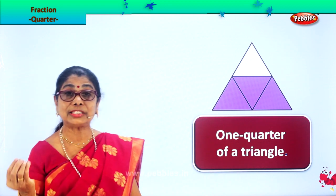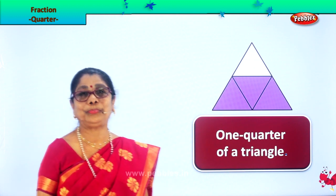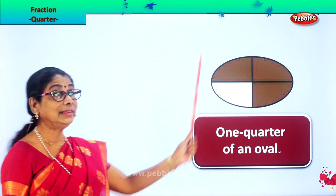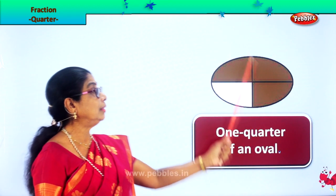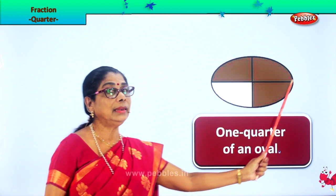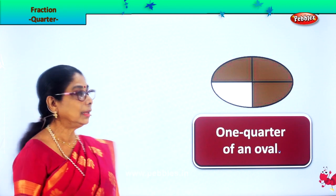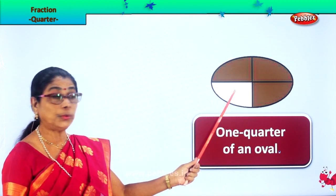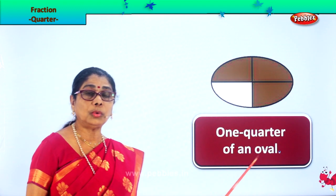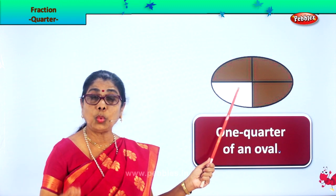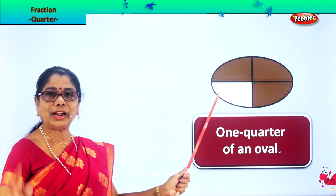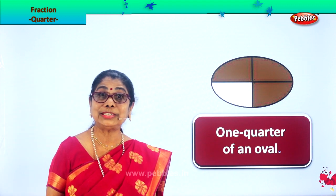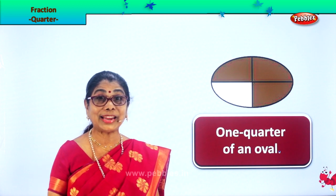Now I hope you understood in fraction what is one quarter. Let's take another shape to understand better. Look. Here you have an oval shape. We cut the oval shape first into two equal halves, then again into four equal parts. Let's count — one, two, three, four. This portion is one quarter of an oval shape. This is one quarter, one by four. If you had an oval shaped cake and we cut it into four parts, here I give you one part — that is one quarter of an oval shaped cake. Did you understand what is one quarter in fraction?